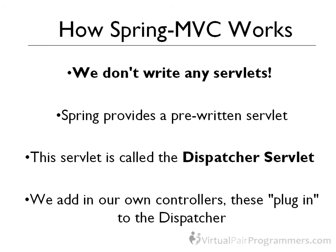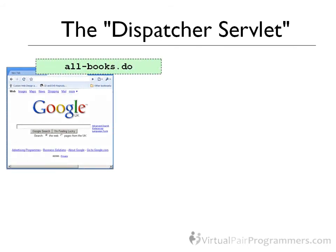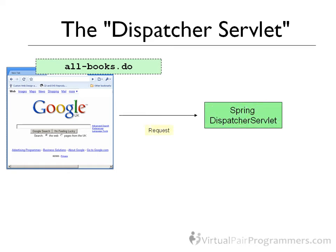Let's have a look at an animation showing how the dispatcher servlet works. Here's our user's browser, and imagine that the user has typed in a URL ending with allbooks.do. This is going to be the web page that displays all of the books held by this particular bookstore. That request will be sent across to a server. With Spring, we're going to make sure that all the incoming URLs are handled by the Spring dispatcher servlet.